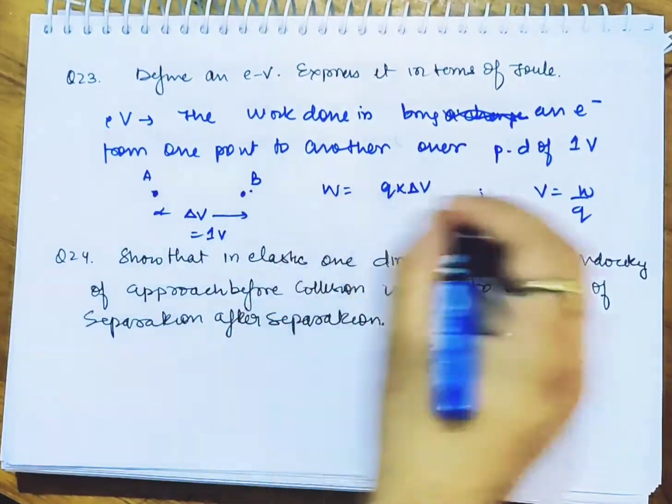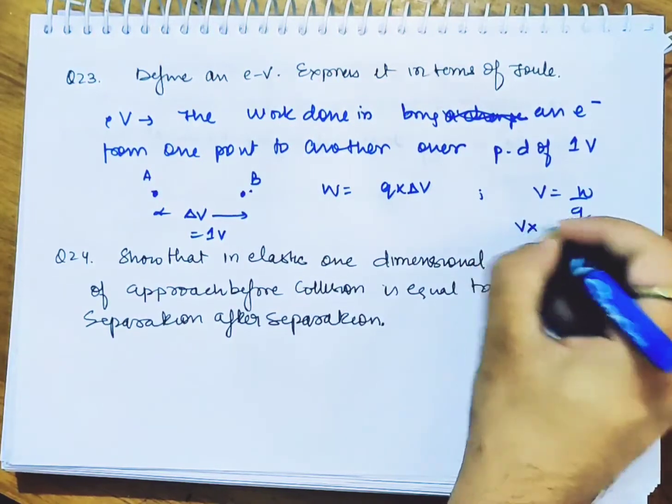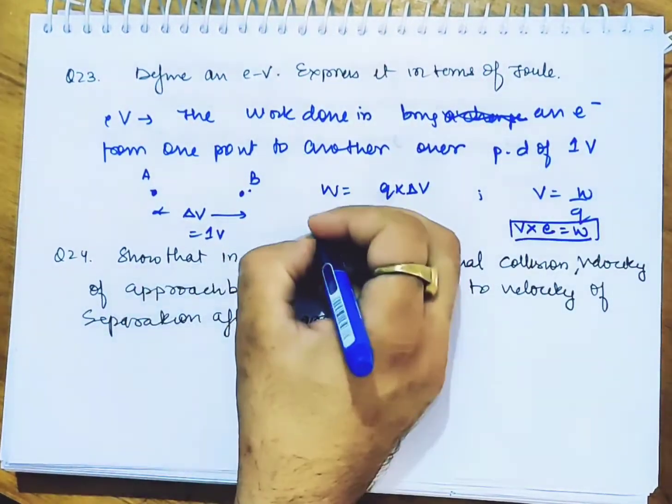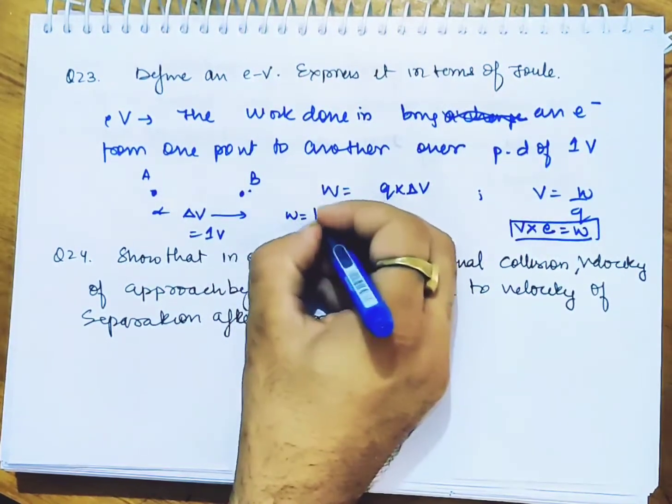Look at it - if it's one volt into charge electron, then work done is electron volt. This, by definition, is 1 electron volt.